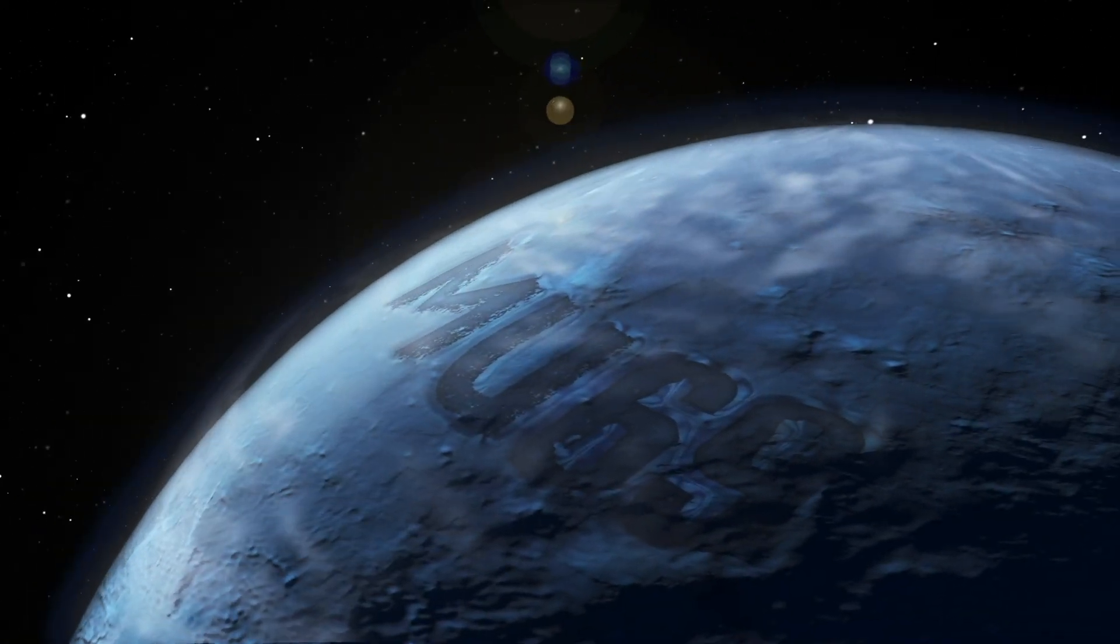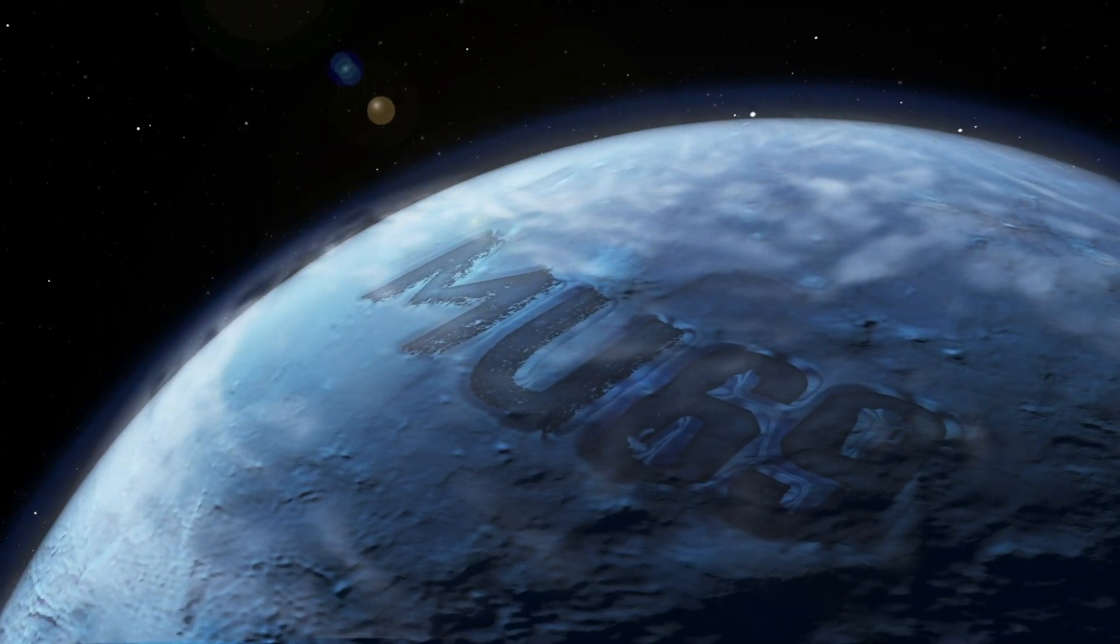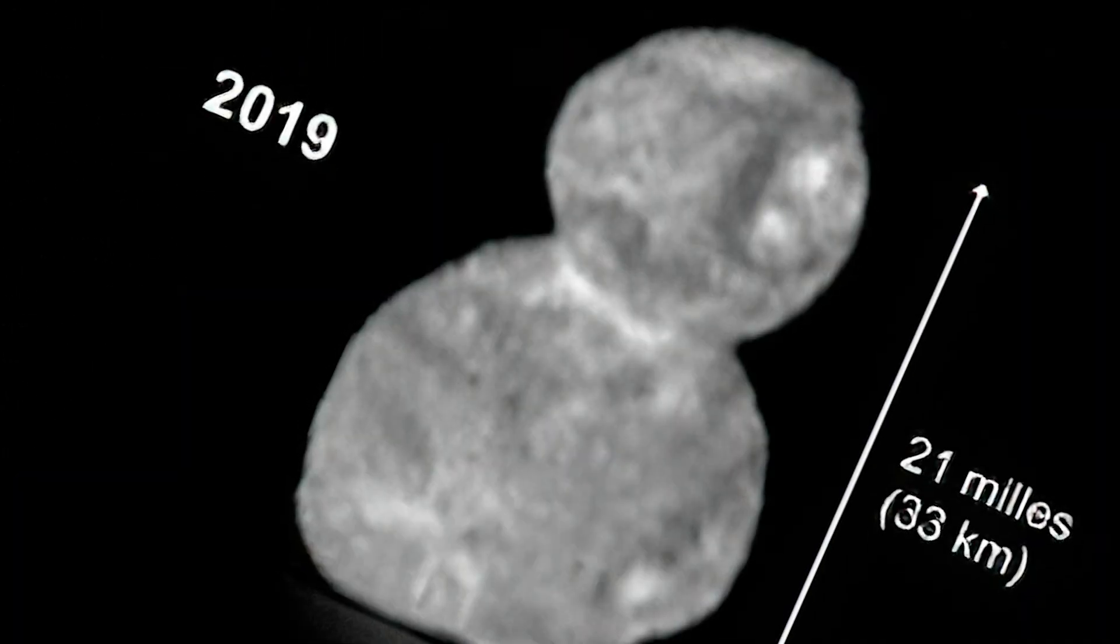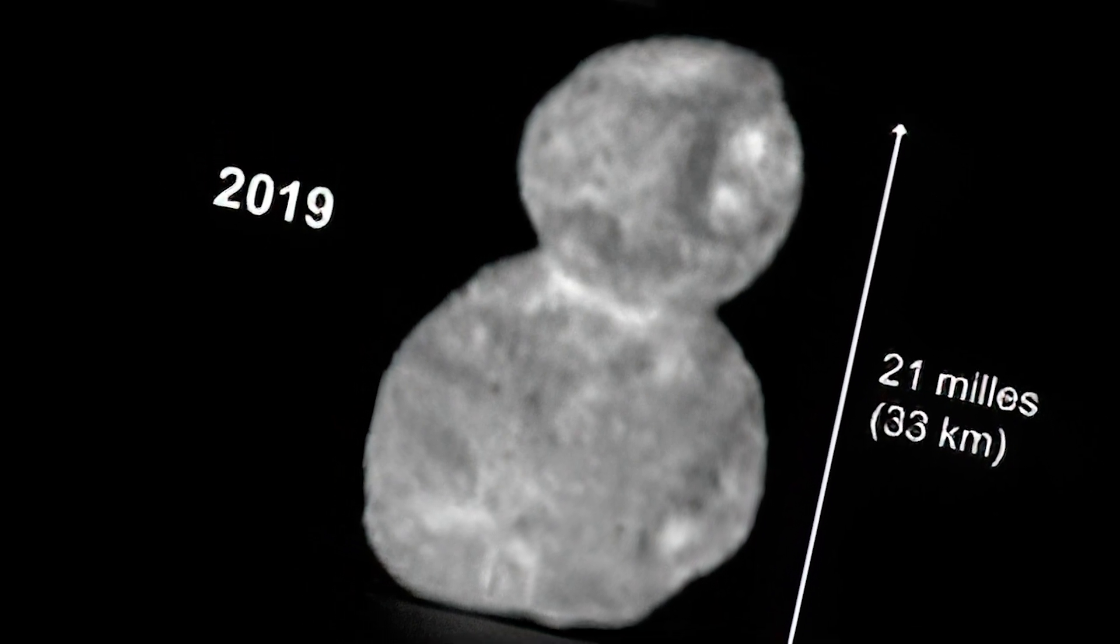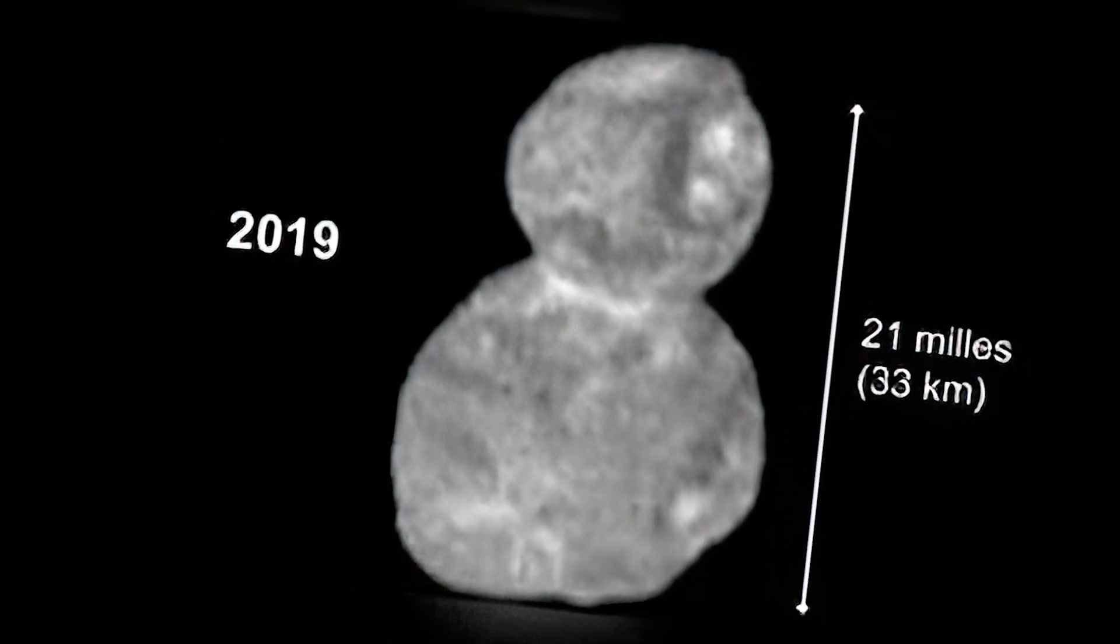MU-69. MU-69, located in the Kuiper Belt, one billion miles past Pluto, is the most mysterious object ever targeted by a NASA expedition.